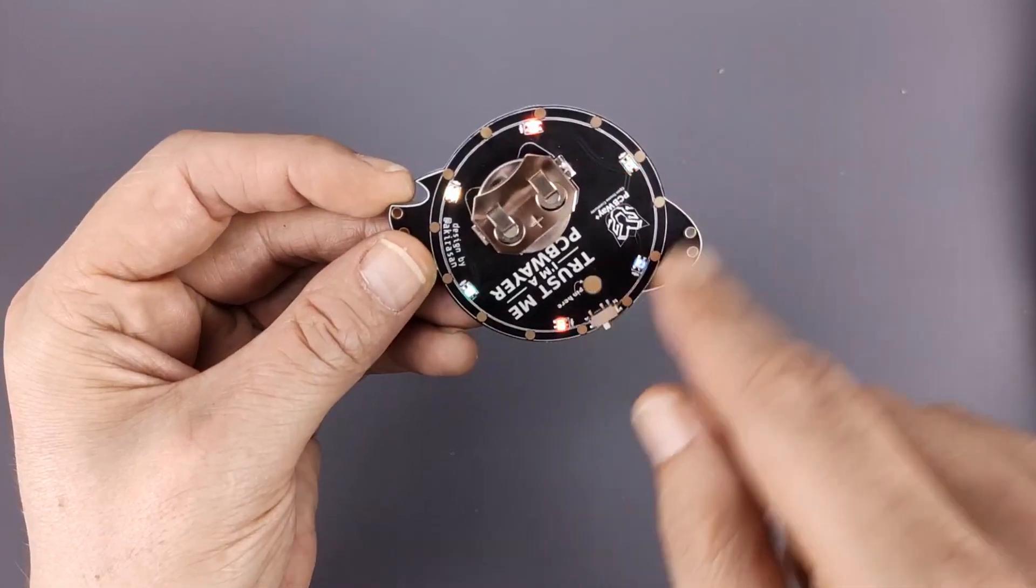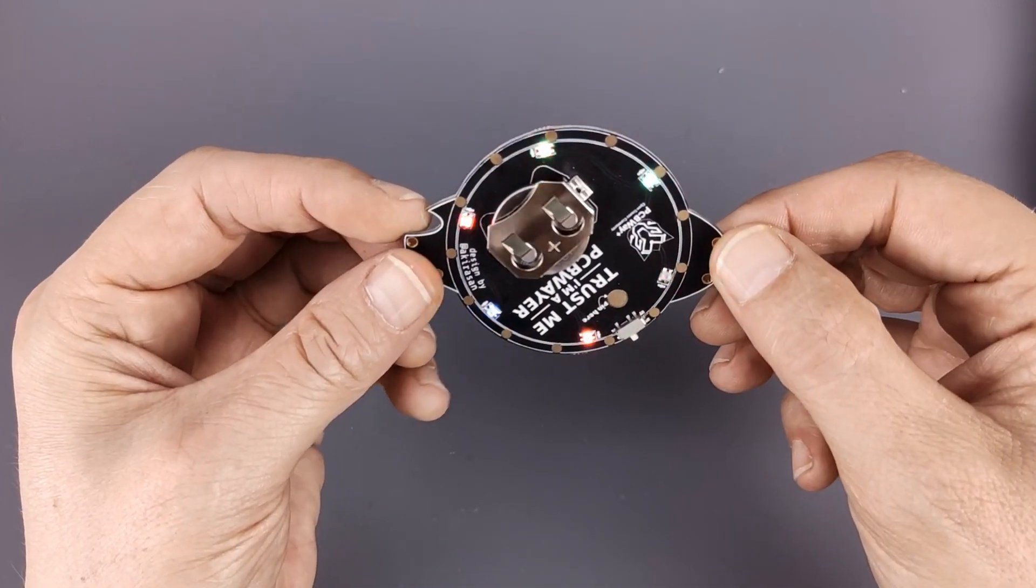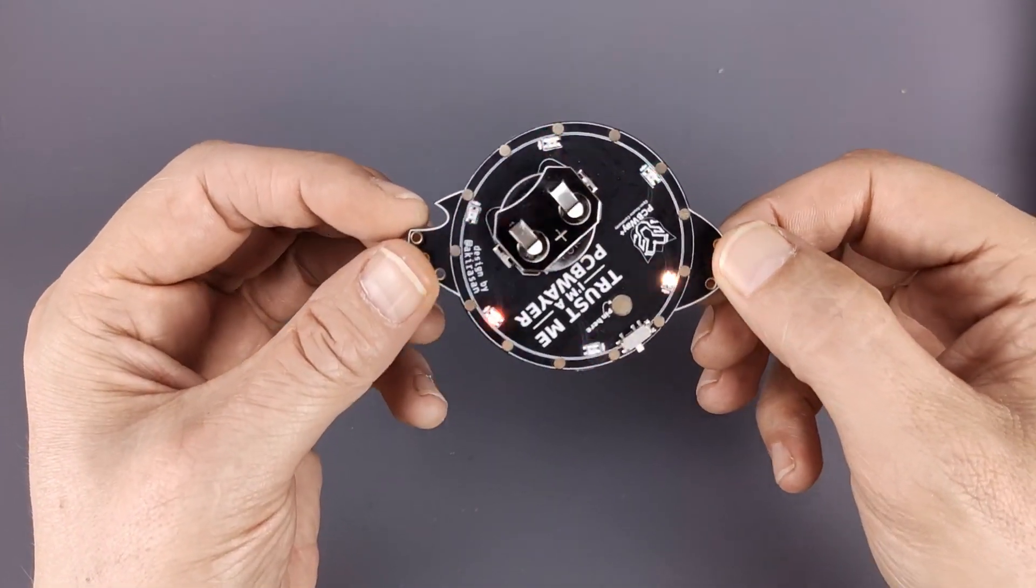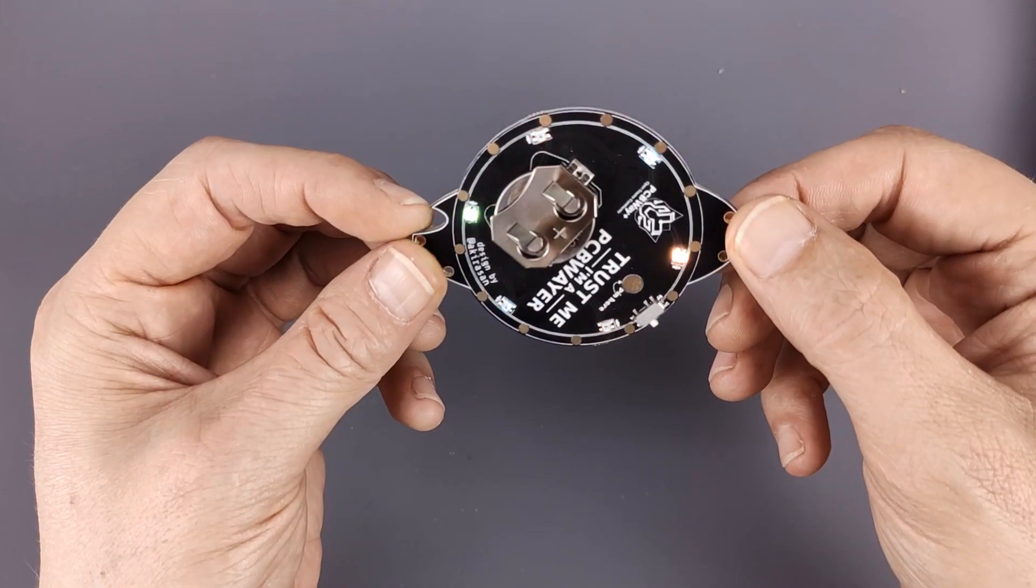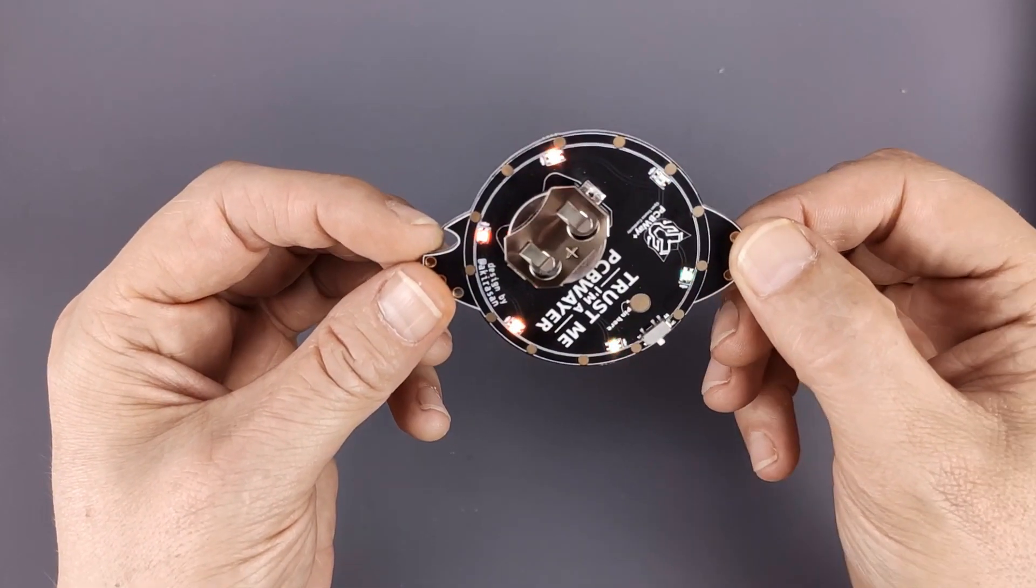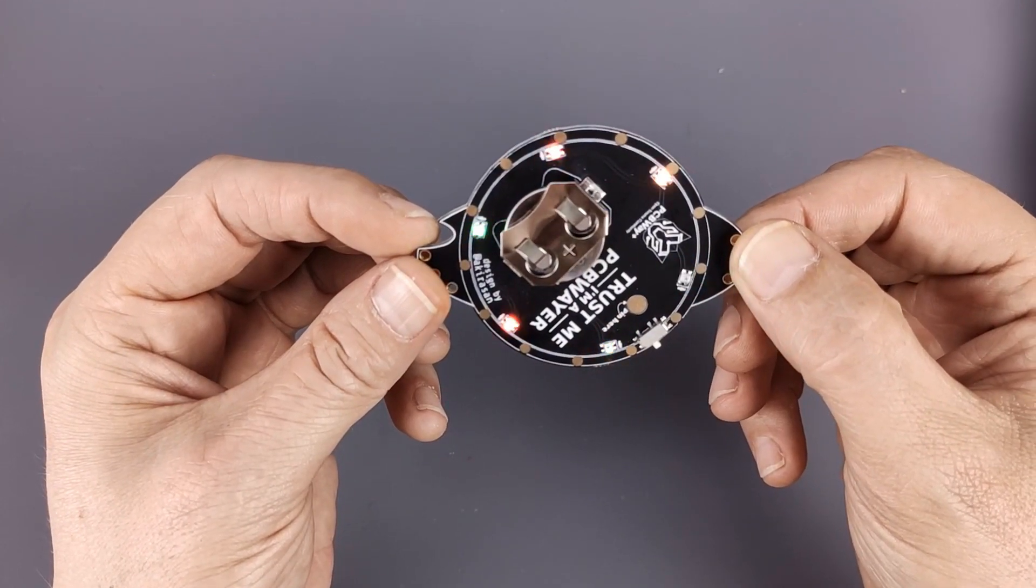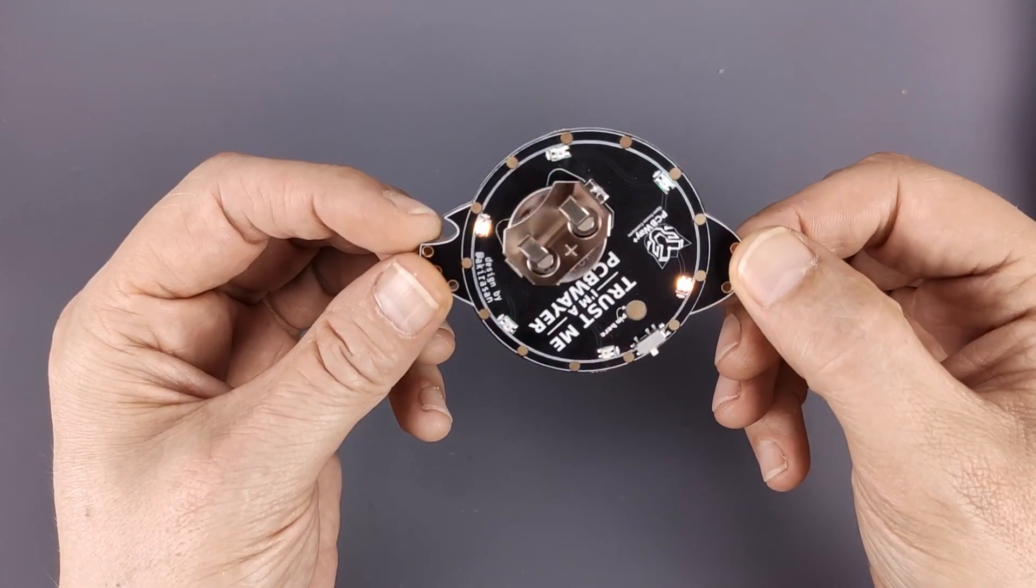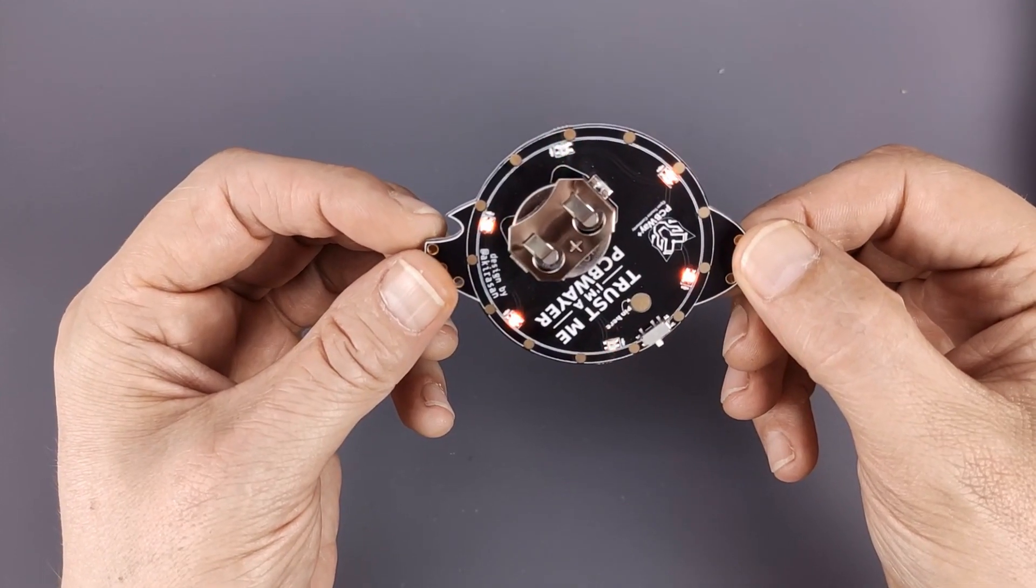So these are the RGB LEDs with, I believe, some circuitry in them so they can run directly off a coin cell. And they will switch through colors - I can see blue, green, yellow, and a few colors in between them in some random pattern, which makes for a really cool badge.